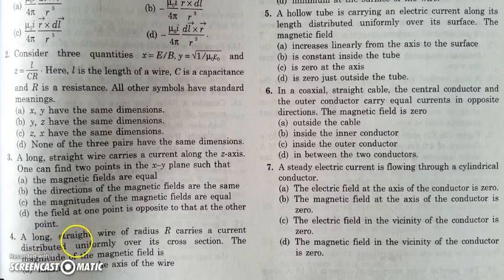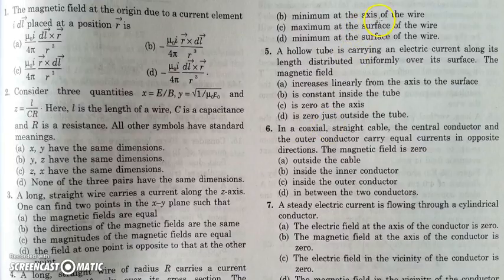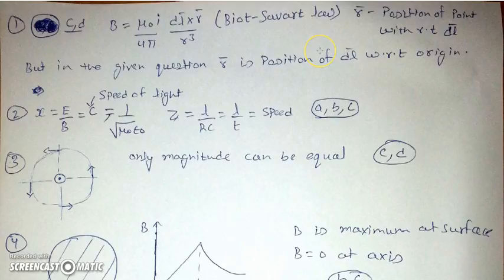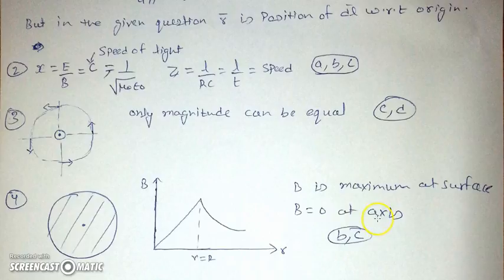In the next question there is a long straight solid wire of radius R carrying a current uniformly distributed over its cross-section. We have to find where the magnetic field is maximum. The magnetic field is maximum at the surface and zero at the axis. So option A — maximum at the axis — is wrong. Option B says minimum at the axis: yes, the field is minimum (zero) at the axis. And the field is maximum at the surface of the wire. Looking at the graph, the field increases linearly till the surface and then decreases. So B is maximum at the surface and zero at the axis.